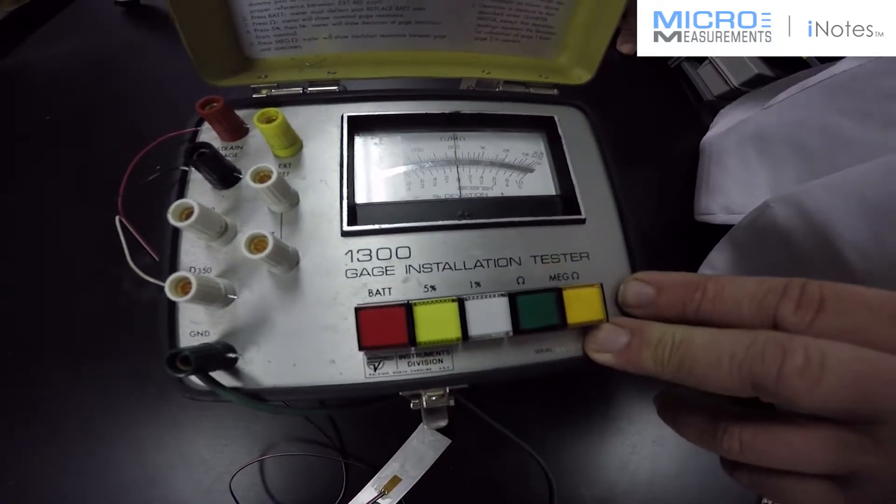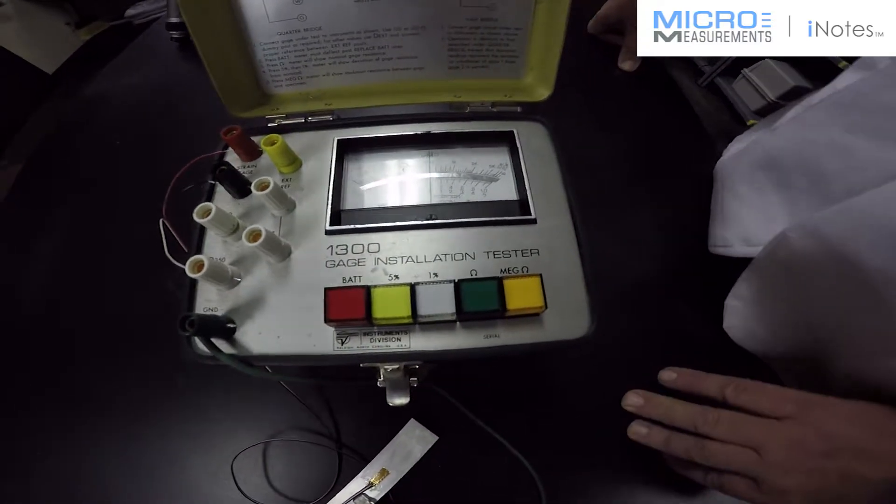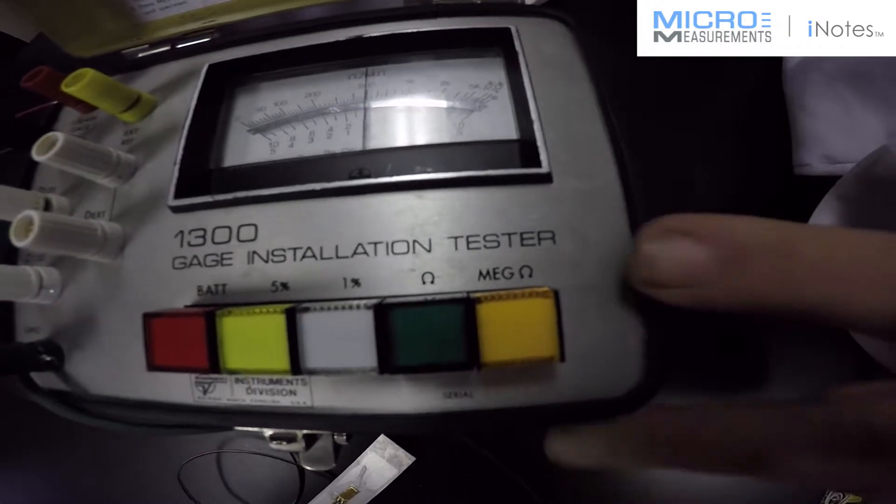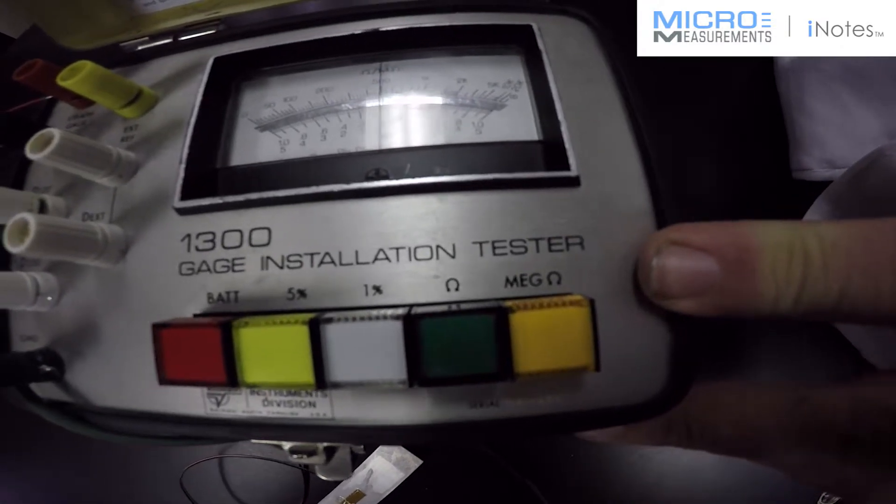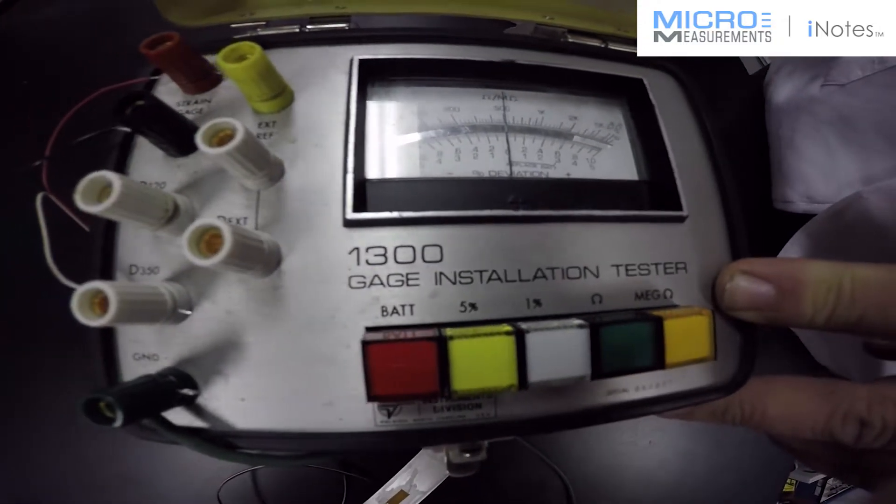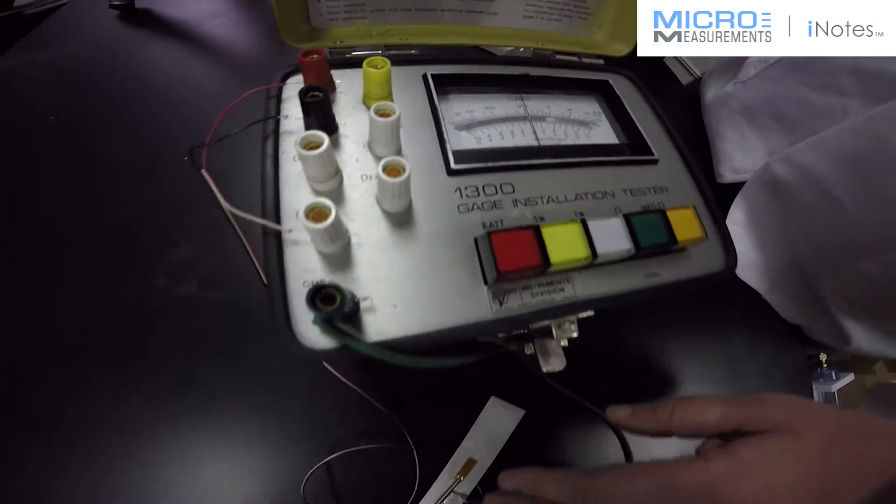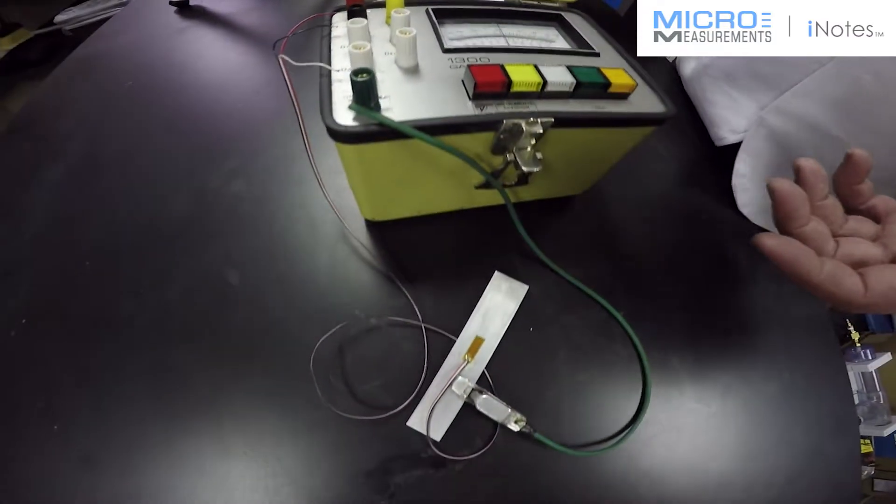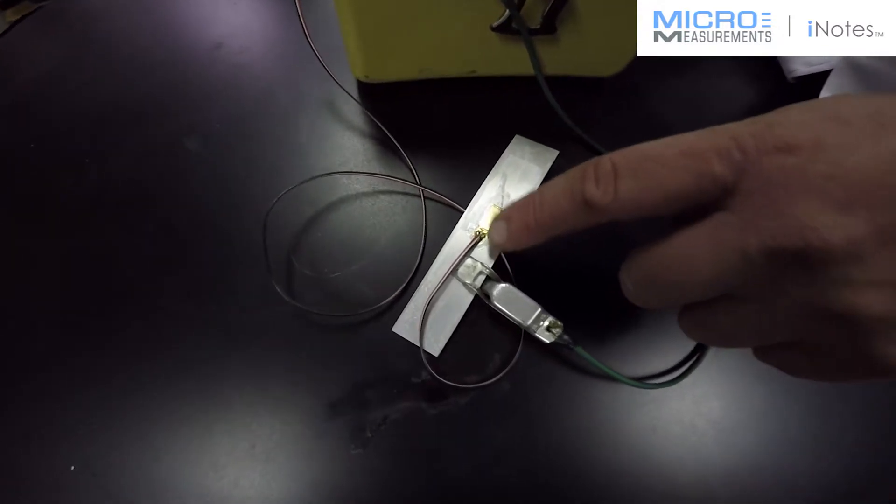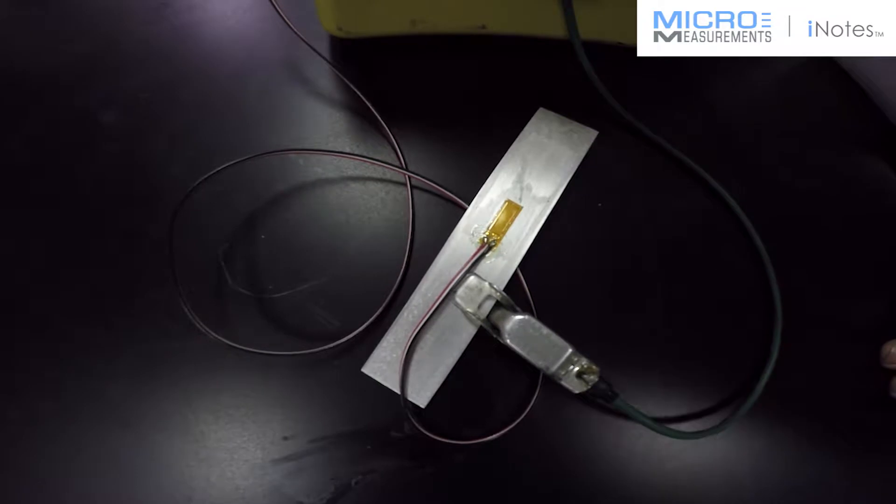Now, the really nice feature of the Model 1300 is it has a mega ohm feature. And most commercial mega ohm meters are going to use a very high voltage to check resistance to ground. You don't want to put a high voltage across your strain gauge because anything over about 100 volts - these mega ohm meters can typically use 250 to 500 volts - there's a good chance of arcing. The insulation strength of a strain gauge is typically around 100 volts.